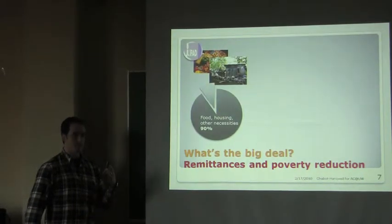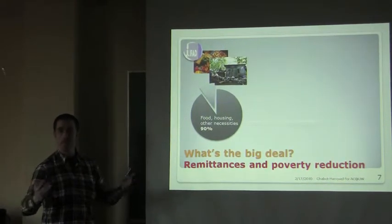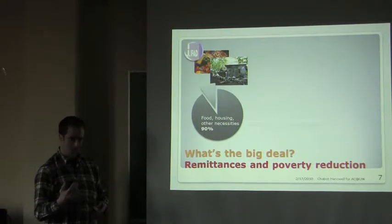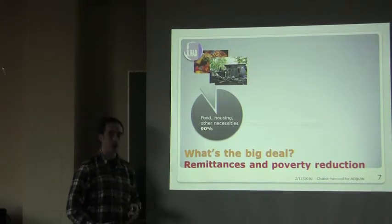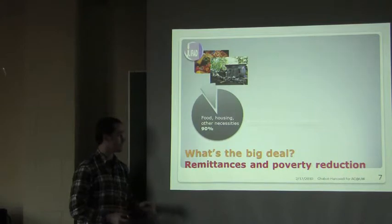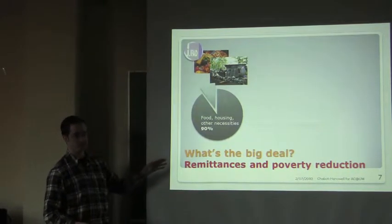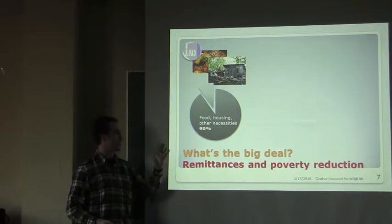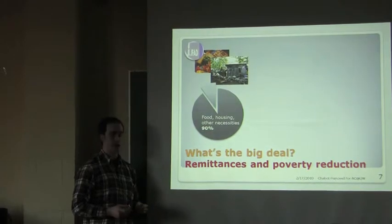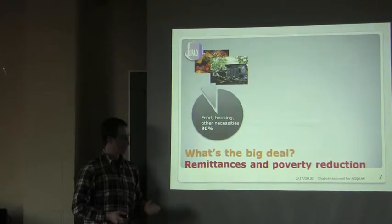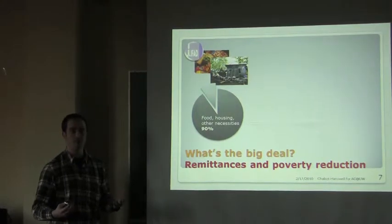The macroeconomic importance of remittances is concentrated in developing countries, but what about the microeconomic importance — the importance to households and individuals? The International Fund for Agricultural Development estimates, albeit crudely, that in developing countries 90% of remittances received are spent on food, housing, and other necessities. This suggests that remittances may have some poverty-reducing effects.